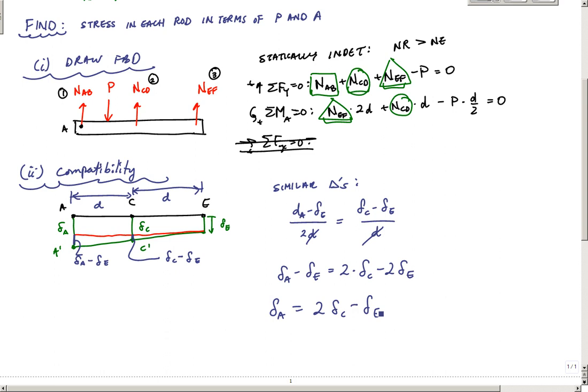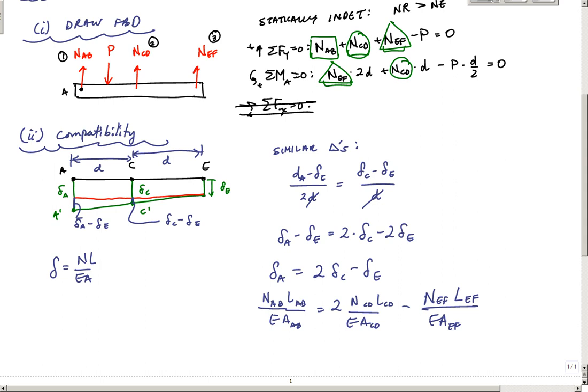If I substitute the definition of the axial deformation of each rod, that equation delta is equal to NL over EA. I would have NABL over EAAB is equal to 2 times NCD LCD over EACD minus NEF LEF over EAEF. All the areas are the same, all the modulus of elasticities are the same, so I can cross these out because I have the same material, same length, same cross-sectional area, and this equation I'm just left with NAB is equal to 2NCD minus NEF.